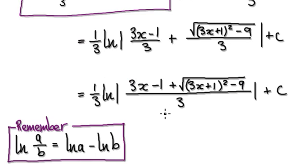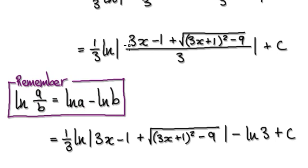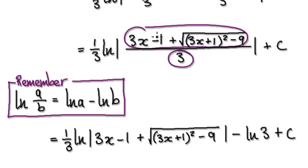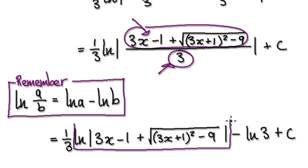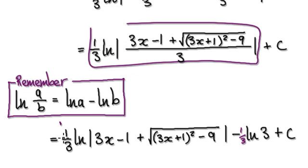Remember, whenever you natural log one thing divided by another thing, that's the same as this. So here we've got one thing divided by another thing — we're natural logging one thing divided by another thing. That's the same as doing this. I forgot a third here — so this whole thing here will then become this.